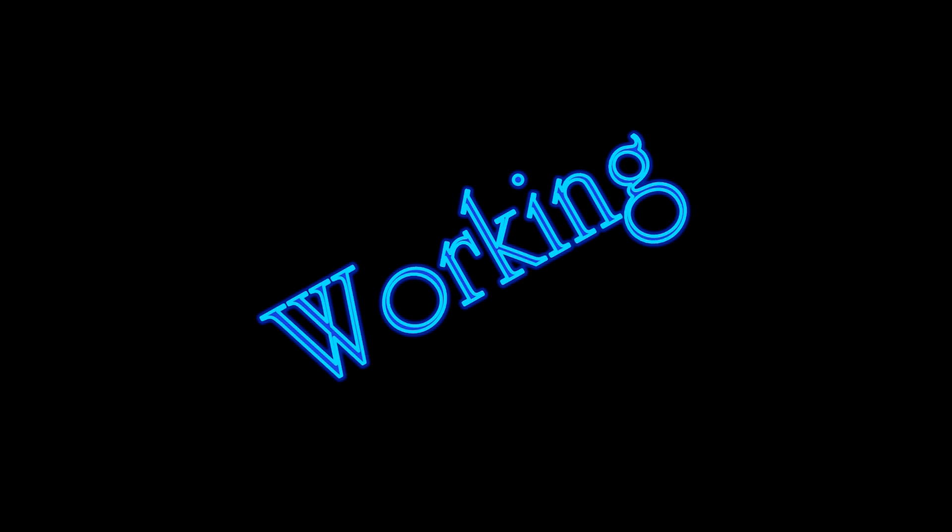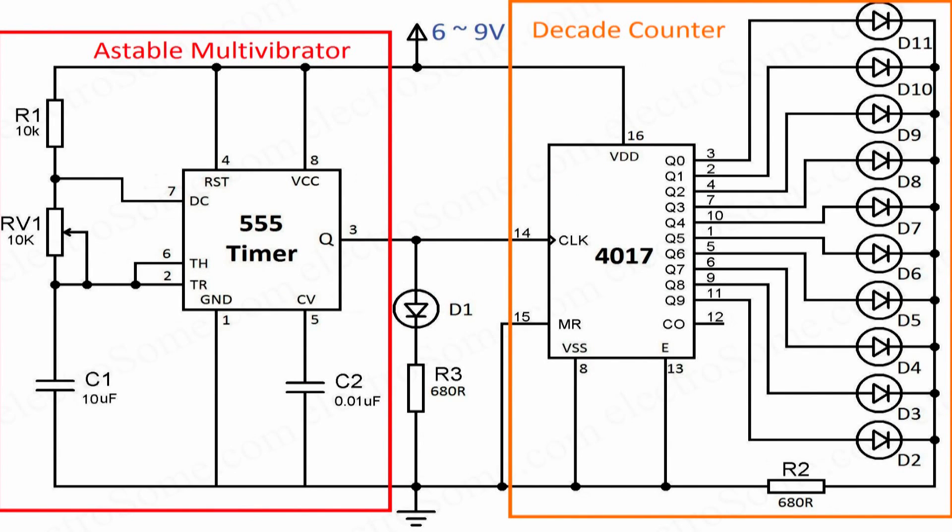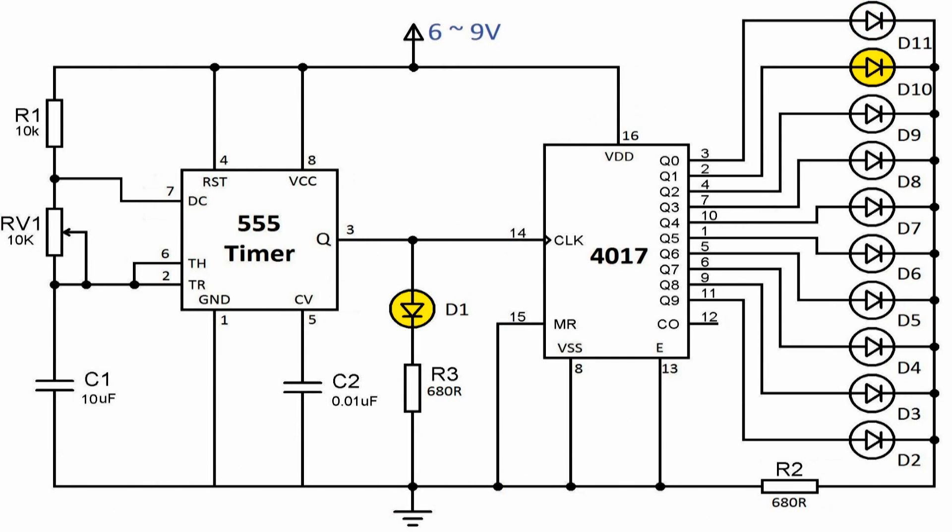Let's see the working of the circuit. As you can see, the output of astable multivibrator is connected to the clock input of counter. So the output of the decade counter will increment as per the output frequency of 555 timer.